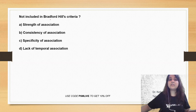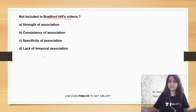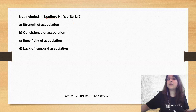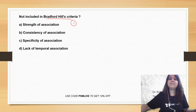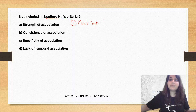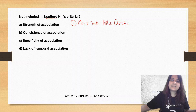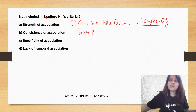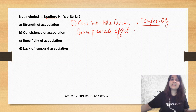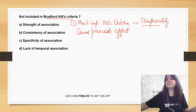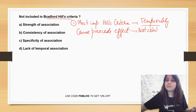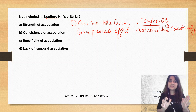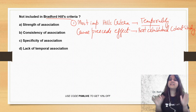Let's look at a question: which is not included in Bradford's Hill criteria — strength of association, consistency, specificity, or lack of temporal association? Before we answer this, let us see what Hill's criteria are and how you can remember them. Ask yourself: which is the most important Hill's criteria? It is temporality. Temporality means cause precedes effect — if you smoke, then only you are going to develop lung cancer. It is best established by a cohort study. Most important Hill's criteria: cause precedes effect, temporality, best established by cohort.